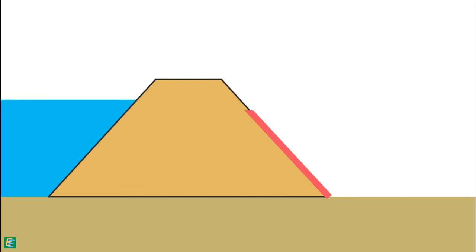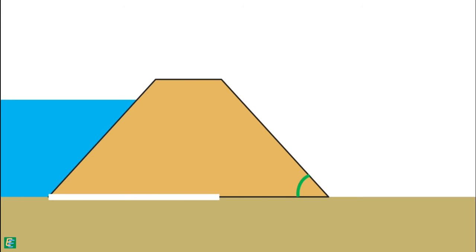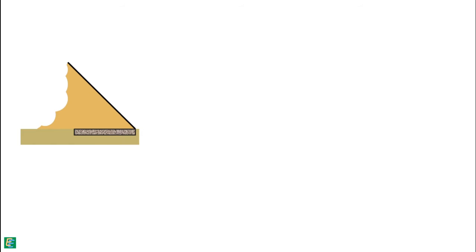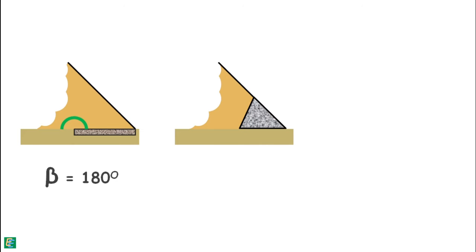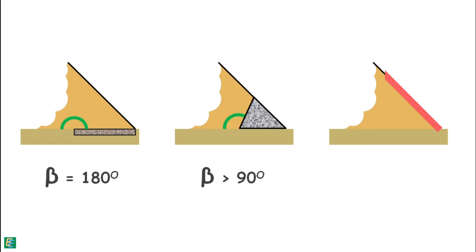The downstream face of the dam is inclined with the horizontal. This inclination of the discharge face is described relative to the bottom boundary flow line as angle beta and is measured clockwise. In the case of a horizontal filter, beta is 180 degrees. In the case of a discharge face being a rock toe, beta is greater than 90 degrees. In the case of the discharge face being the downstream slope, beta will be less than 90 degrees.